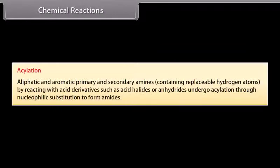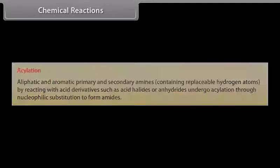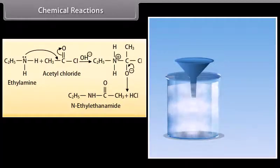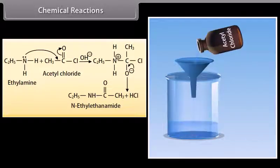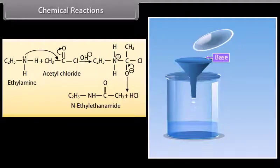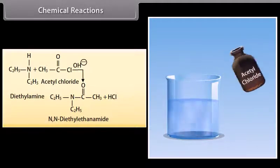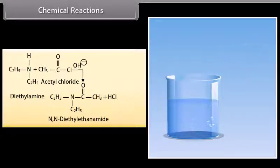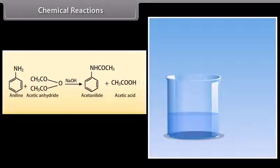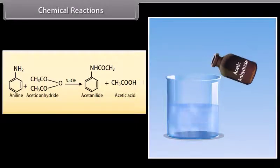Acylation: Aliphatic and aromatic primary and secondary amines containing replaceable hydrogen atoms, when reacted with acid derivatives such as acid halides or anhydrides, undergo acylation through nucleophilic substitution to form amides. Acetyl chloride reacts with ethylamine in the presence of a base to form N-ethyl ethanamide and hydrochloric acid. Acetyl chloride reacts with diethylamine in the presence of a base to form N,N-diethyl ethanamide and hydrochloric acid. Acetic anhydride reacts with aniline in the presence of sodium hydroxide to form acetanilide and acetic acid.